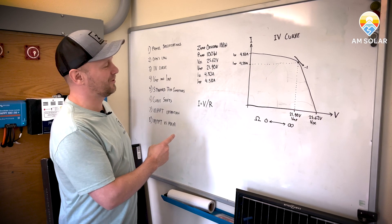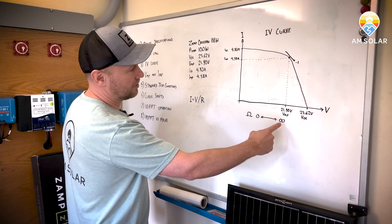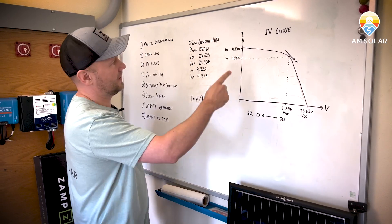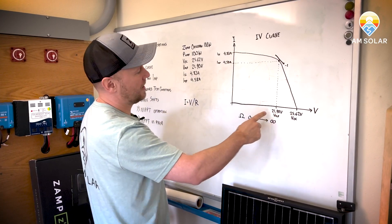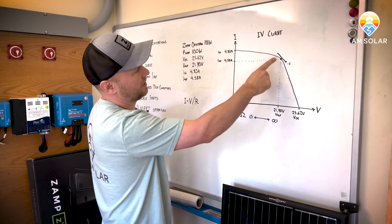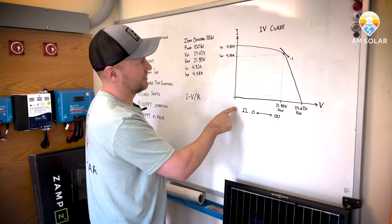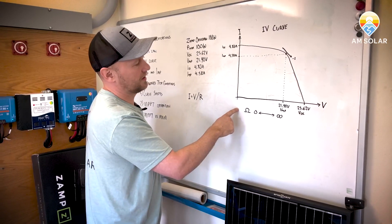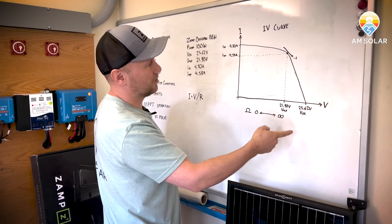So if you were to take a solar panel and vary the resistance from zero to infinity and then graph the voltage and current, as you do that, you end up with a shape like this. So here would be zero resistance, which is a short circuit. And out on this end is infinite resistance, which is open circuit.